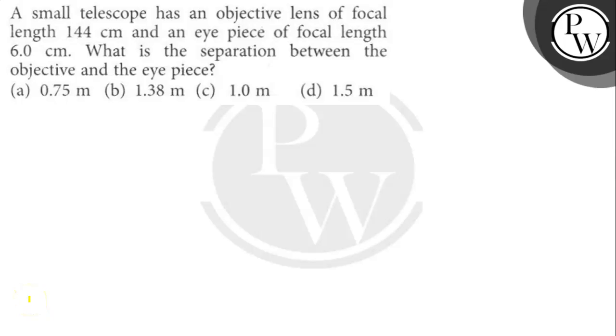Hello, let's get to the question. The question says here, a small telescope has an objective lens of focal length 144 cm and an eyepiece of focal length 6 cm. What is the separation between the objective and the eyepiece?